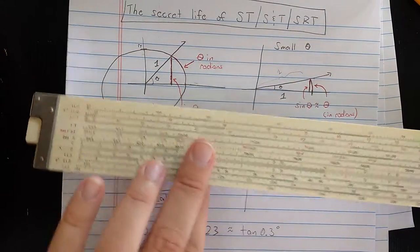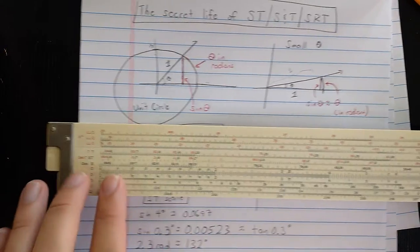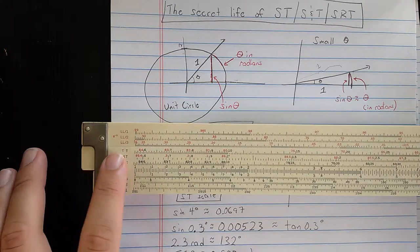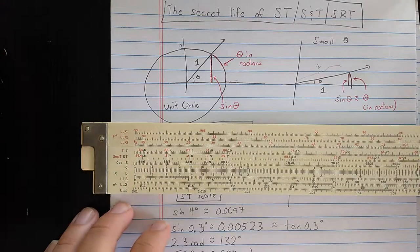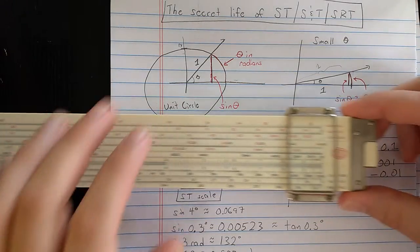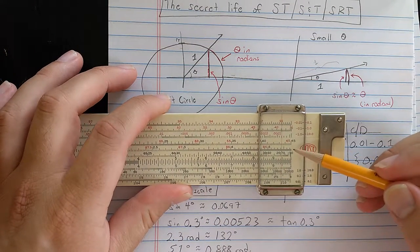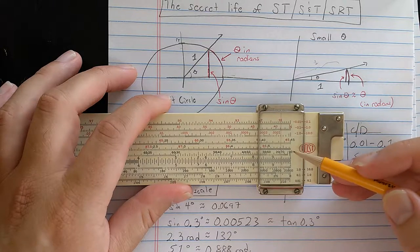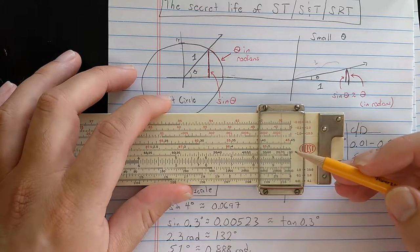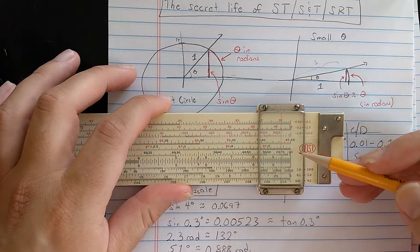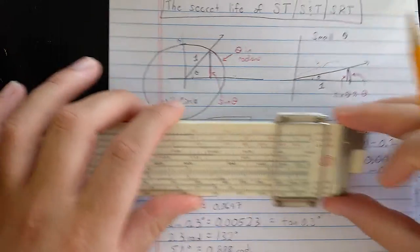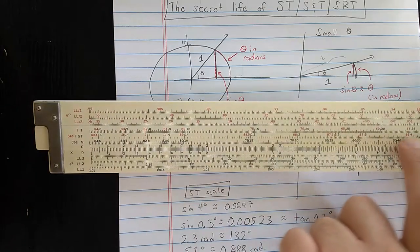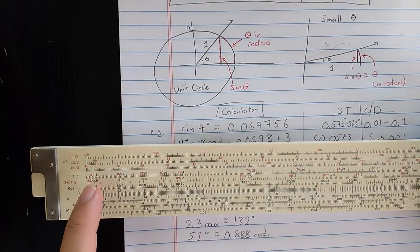Both start at the same place, and we know that if we want to continue the S scale or the T scale to the left, we can use the ST scale, which has that number about 5.7 and really about 5.73 at the right index, and then continuing backwards to about 0.573.